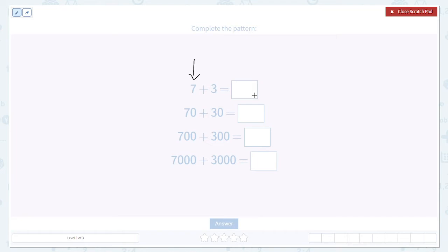In 70, though, the seven has been moved one place over. Now it's in the tens place. Then in 700, the seven has been moved over again, now to the hundreds place. Finally, in 7,000, the seven has been moved all the way to the thousands place.